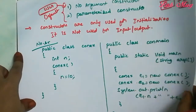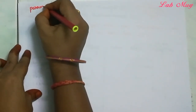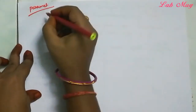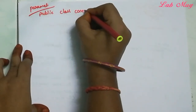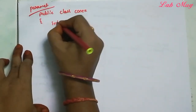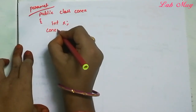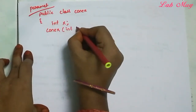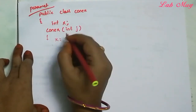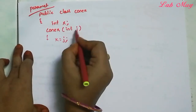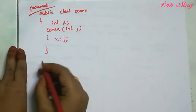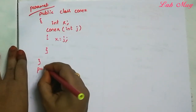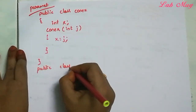Next is the Parameterized constructor — the second example. We take two classes. Public class ConstructorExample. We take one variable: int x. The constructor takes a parameter int j, and inside we write x equal to j. Here x is the class variable and j holds the passed value.